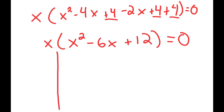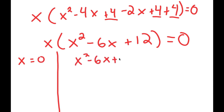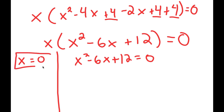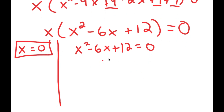This equals 0, and this gives me two equations. I get x is equal to 0, and I get x squared minus 6x plus 12 is equal to 0. So x equals 0 is already a solution, and x squared minus 6x plus 12 equals 0 needs to be solved further.